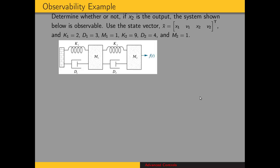Now an example. We want to determine whether or not if we're using the position of mass 2 as the output, the system shown below is observable. We're going to use the state vector made up of the position and velocity of the two masses, x1, v1, x2, v2, and the following parameters for the system. So we have the k, d, and m values for the two degrees of freedom.